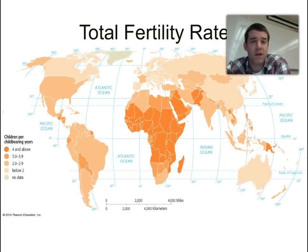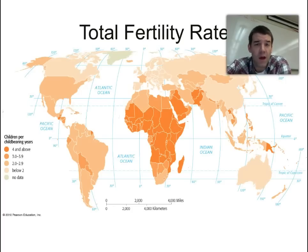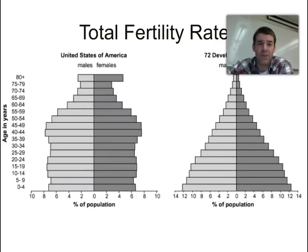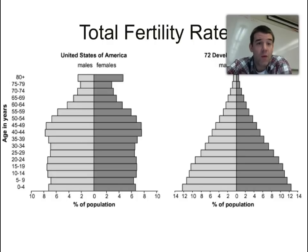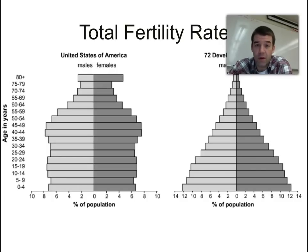Looking at a global choropleth map of total fertility rate, you can see the relatively high numbers in Africa compared to the rest of the world, and in places like the Middle East where male-dominant societies or different cultural norms play a role. Looking at population pyramids comparing the United States to the 72 lowest developing countries, you see a distinct change in fertility rate: rapid growth in the developing world versus the stable, nearly rectangular shape of the US pyramid, reflecting a fertility rate close to the death rate.